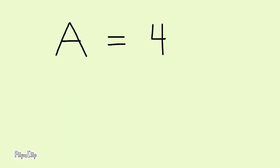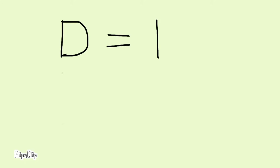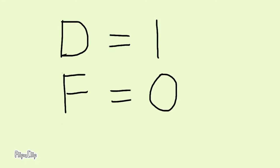The most common GPA scale: A is worth 4 points, B is worth 3 points, C is worth 2 points, D is worth 1 point, and F is worth 0 points.